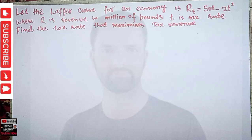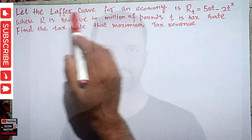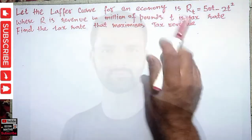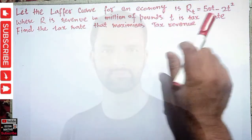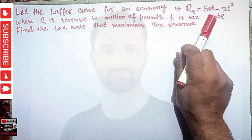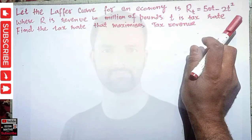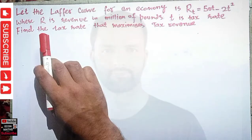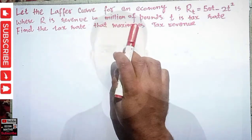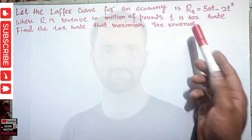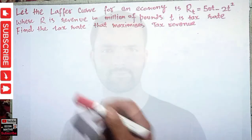In this video we will try to solve a problem on the Laffer curve that was asked by a friend on WhatsApp. The question is: let the Laffer curve for a foreign economy be given by R = 50t - 2t², where R is the revenue in millions of pounds and t is the tax rate.